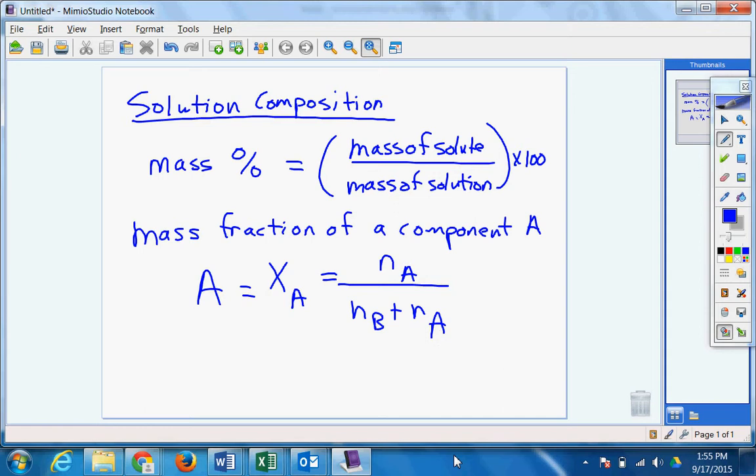So the mass fraction. What's the total amounts on the bottom and whichever one you're looking for? It's not much different than mass percent. Except you're going to get a decimal point. You're not multiplying by 100. You're getting a decimal point. Very simple.